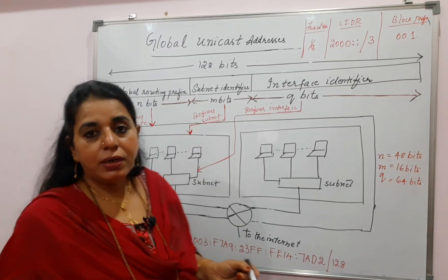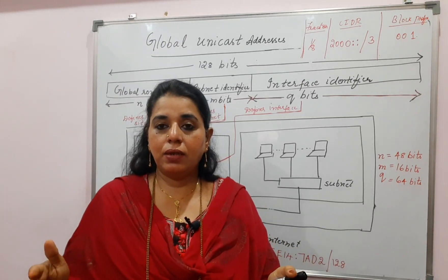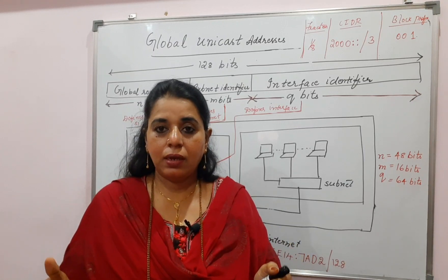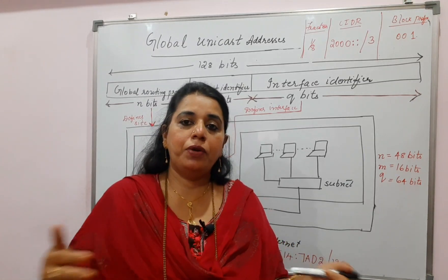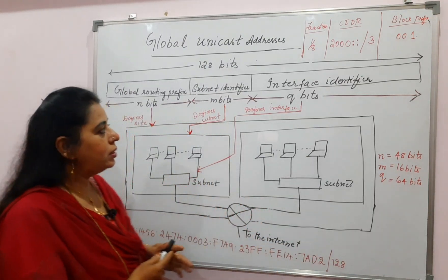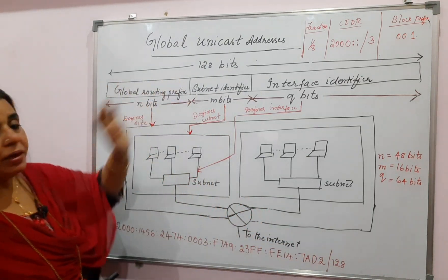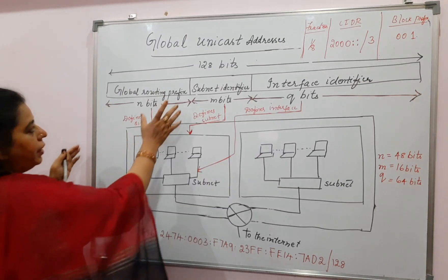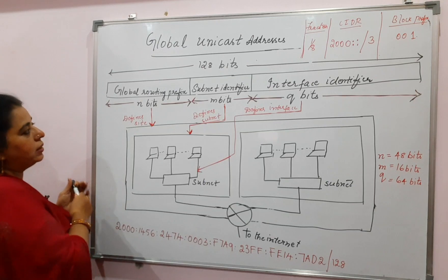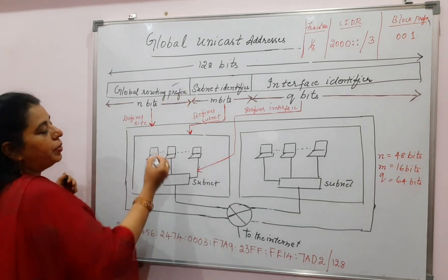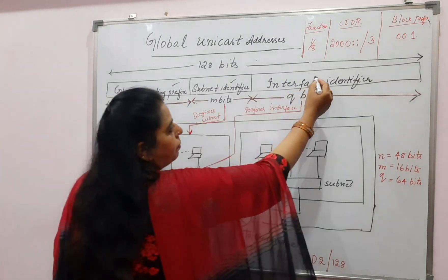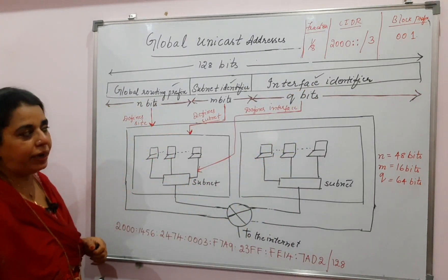Now, try to understand the global unicast address. You are starting with 128 bits of IPv6 address. Similar to IPv4, wherein you divided into prefix part and suffix part, here you can see how the IPv6 128 bits are divided. It can be divided into three different parts: the first part is called the global routing prefix, the second part is the subnet identifier, and the third part is called the interface identifier.